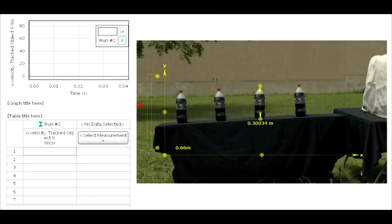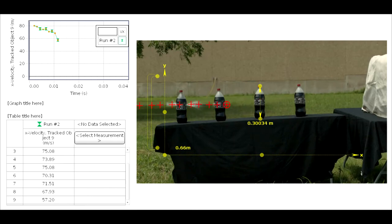The velocity versus time graph indicates that the bolt is traveling at a constant velocity until it pierces the first bottle, upon which it drastically decreases in velocity. It then maintains a reduced constant velocity until it pierces the second bottle, and so on.